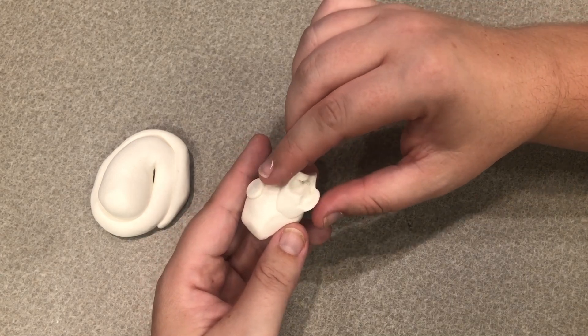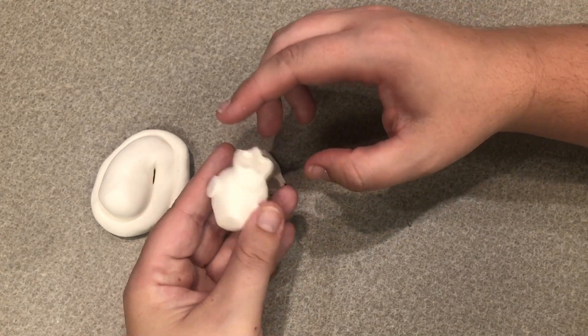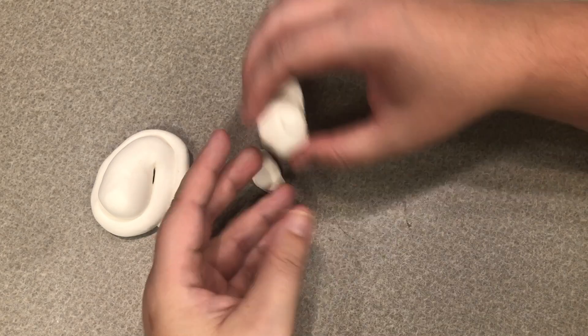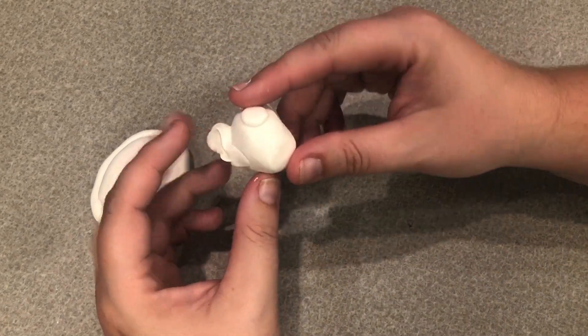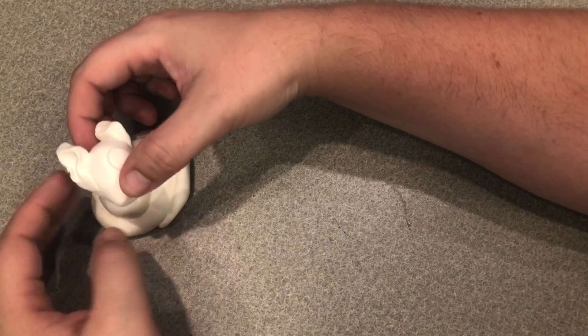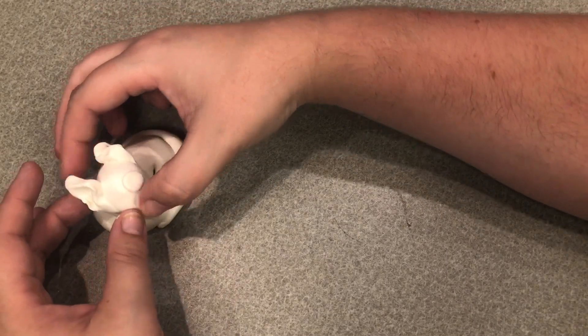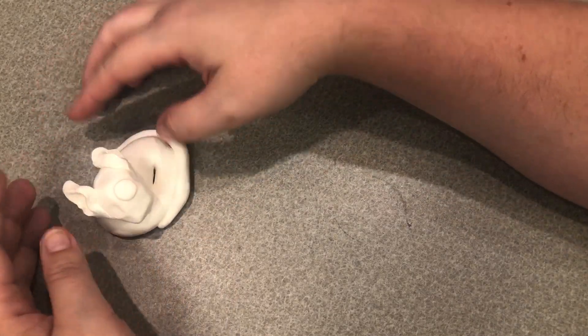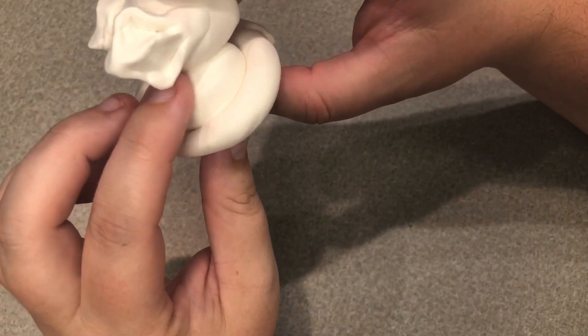And then we just need to make one more ear. Once we have both of his ears how we want them we're just going to add the head onto the body. We'll just gently press it on there.